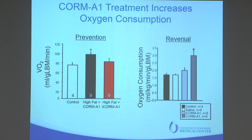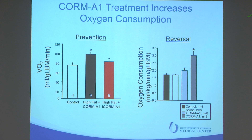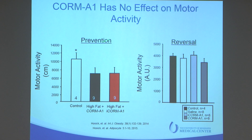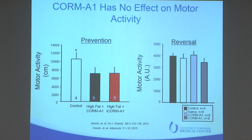Next we looked at metabolism by measuring oxygen consumption. We put mice in specially designed metabolic cages to measure oxygen consumption, carbon dioxide production, food intake, movement, and heat production. In both the prevention and reversal studies, we saw a dramatic increase — in the reversal study, almost a doubling in the oxygen consumption rate. So CORM really revs up the metabolism. When we looked at activity in both studies, we really don't see any effect of CORM treatment on activity. Interestingly, in the prevention study, the high-fat mice given CORM A1 have significantly lower body weights yet are not any more active — suggesting we've dissociated activity from weight loss in this model.